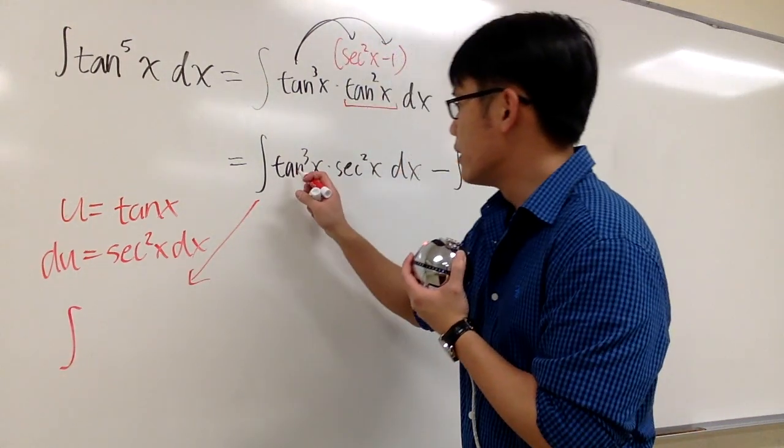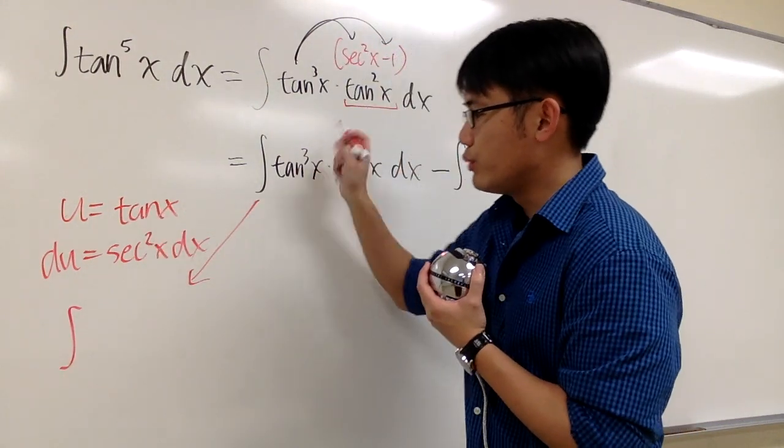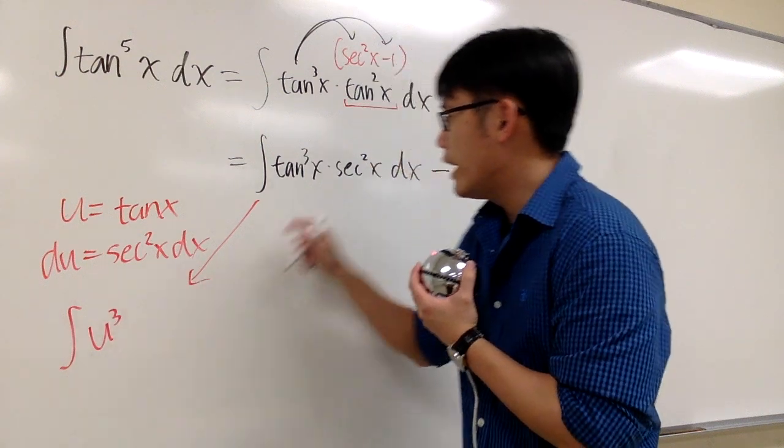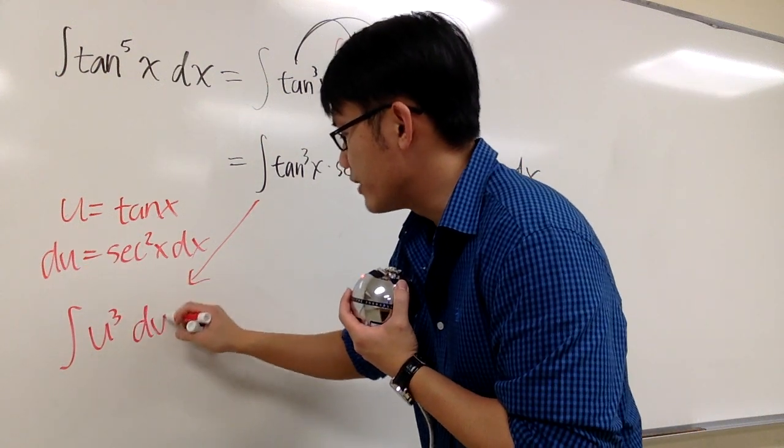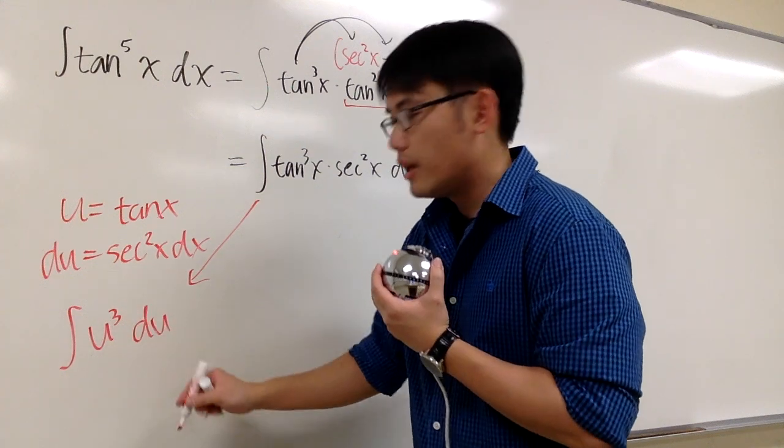So this integral is just the same as, let's take a look, integral of tangent, which is u. So we have u to the third power. And you see, secant squared dx is the same as du. So we just have the integral of u to the third power du. We can integrate this.